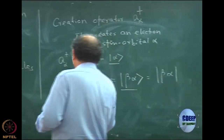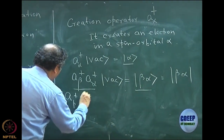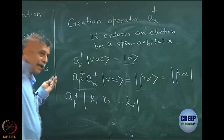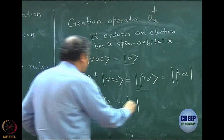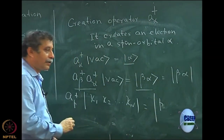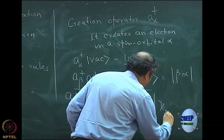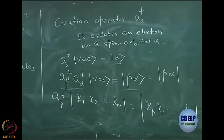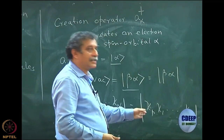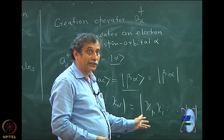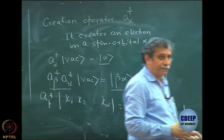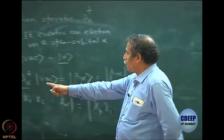Note that when this operator acts, it is not simply creating another electron in the beta orbital but at the same time antisymmetrizing. For example, if I have a†_p acting on an already existing Slater determinant |χ₁, χ₂, ..., χₙ〉 — which can be a Hartree-Fock n-electron determinant — this will generate an (n+1)-electron determinant where the first orbital will be χ_p, then χ₁, χ₂, ..., χₙ. The order of creation is very important because of the sign — it is a determinant.